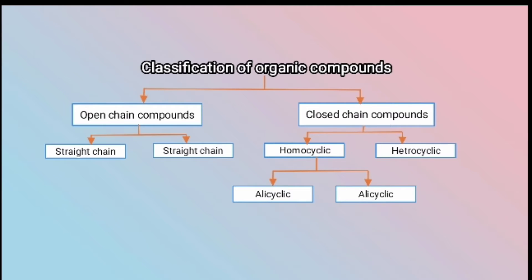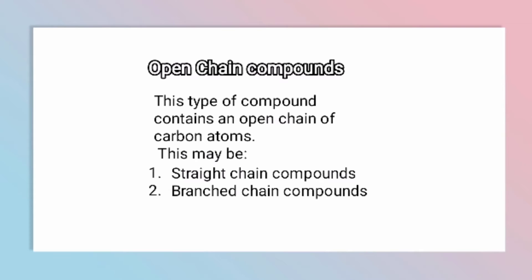In the classification of organic compounds, we have a structure drawn here which will be discussed in detail. The first type is open chain compounds. These compounds contain an open chain of carbon atoms, where the carbon atoms are in a single chain form.